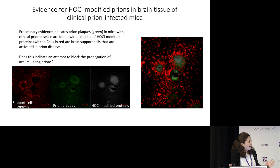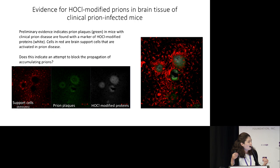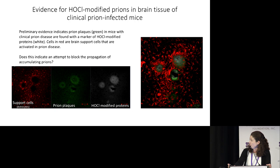What you're looking at here is a slice through brain tissue of an animal with clinical prion disease. You can see the prions in green as well as a marker for these HOCl disinfectants after they've modified proteins, there in white. They co-occur, and what this really suggests to us is that within the brain, they're producing these disinfectants in a way that is modifying the prions, presumably in an attempt to block the propagation of prions in brain tissue.